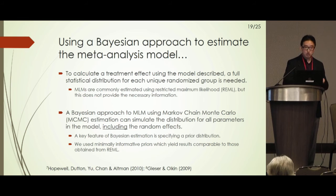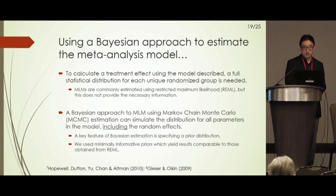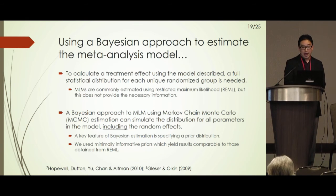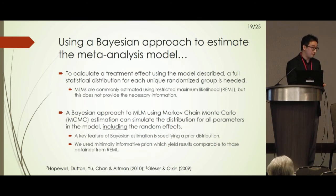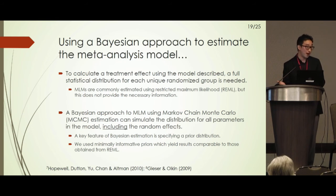The natural way to obtain the full distribution of all group-specific intercepts is through a Bayesian framework. A Bayesian approach to multi-level modeling — typically done with Markov chain Monte Carlo (MCMC) methods — simulates each regression parameter, including those group-specific adjusted means of drinking, yielding an entire distribution. Instead of point estimates, you effectively get a dataset where each column contains simulated values of a regression coefficient, giving us what we need to calculate treatment effects.